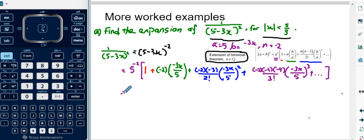The next step is just simply simplifying it. 5 to the power of negative 2 is 1 over 25. Next I have 1 plus 2 times 3 is 6, so 6x over 5. And next 2 times 3 is 6, 6 divided by 2 is 3, and then I have